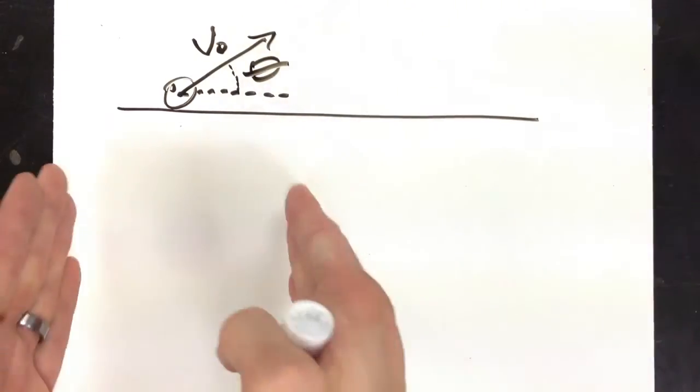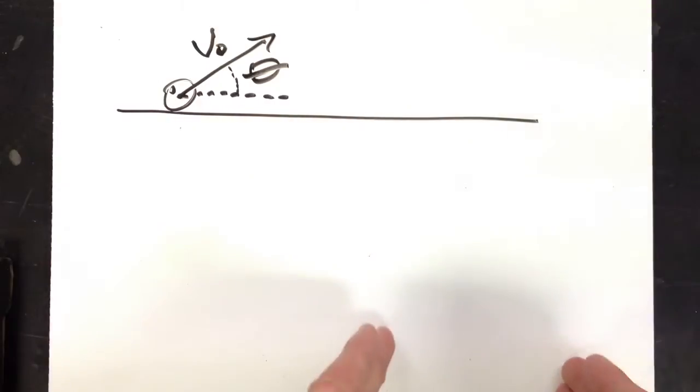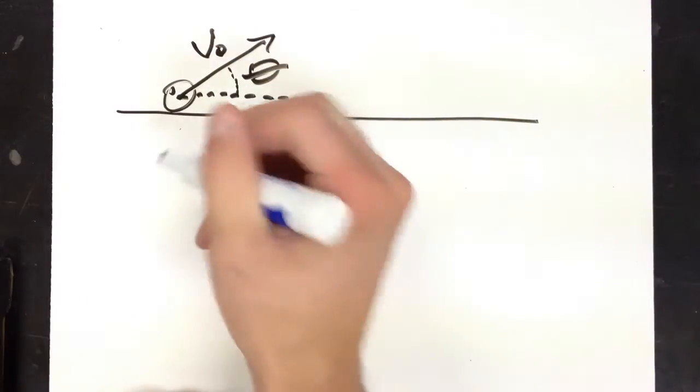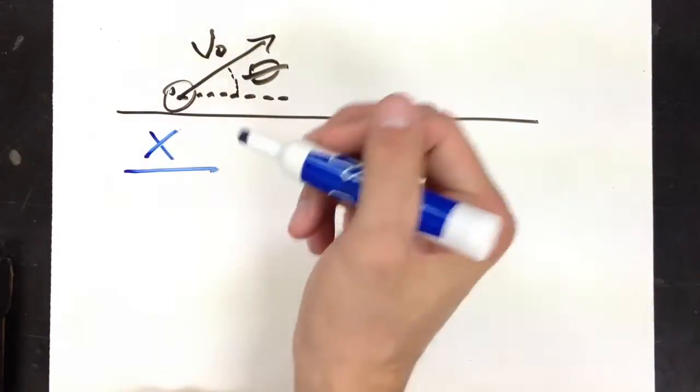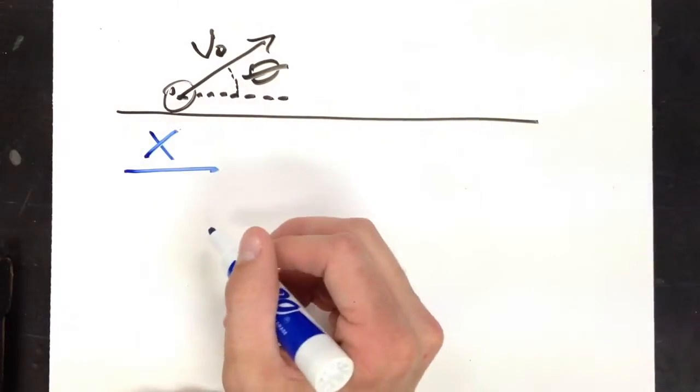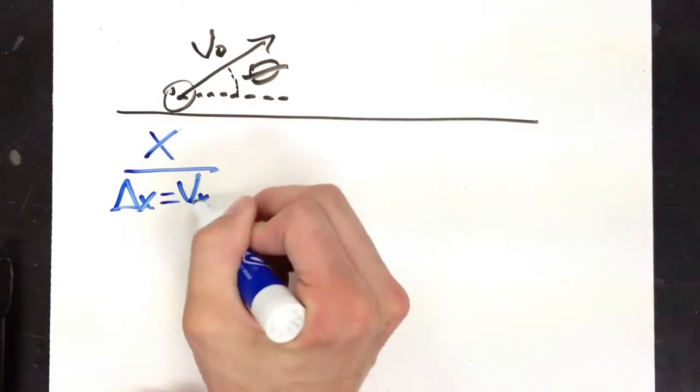Well, we still separate our x and our y's. And still, the only equation for our x dimension, delta x equals vx t.